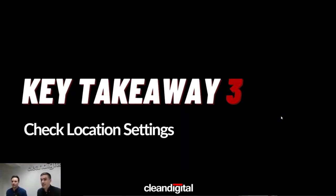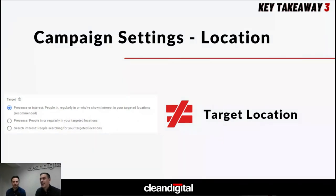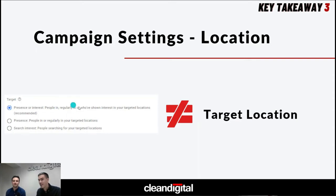Key takeaway three: check location settings. First, double-check that if you want to target the UK you've got United Kingdom as the country target — sometimes we see people have been too broad with their target settings, targeting the whole world. But let's assume your campaign has the correct country target. The default setting means ads can show outside your target location, which seems very backwards. This is the default setting — 'presence or interest: people in, regularly in, or who've shown interest in your target location.' That 'shown interest' part is the sneaky bit.